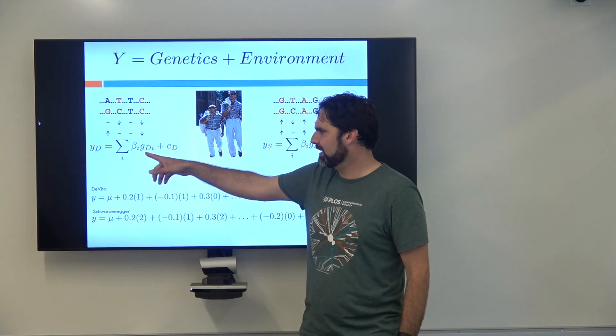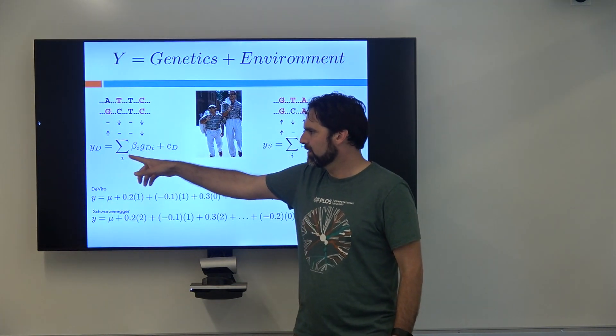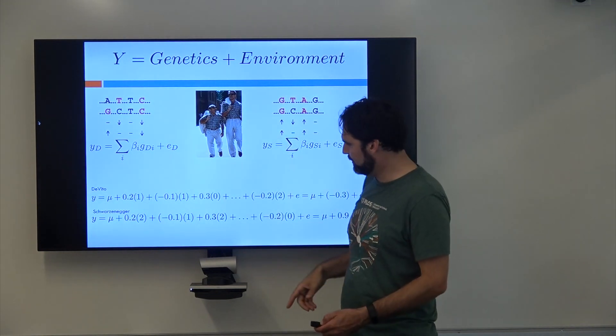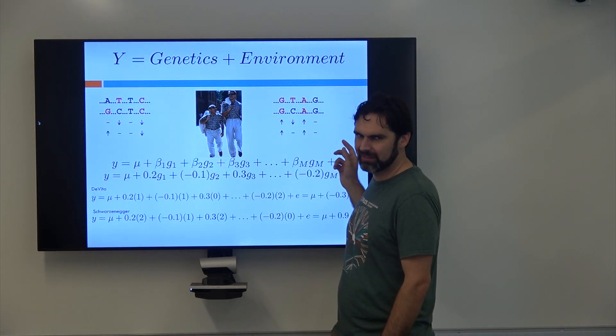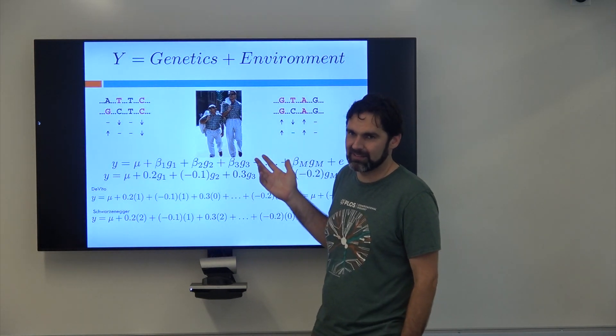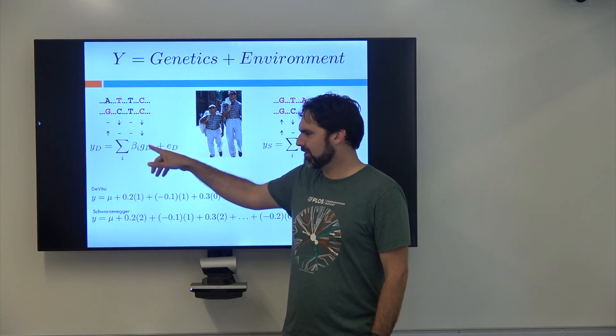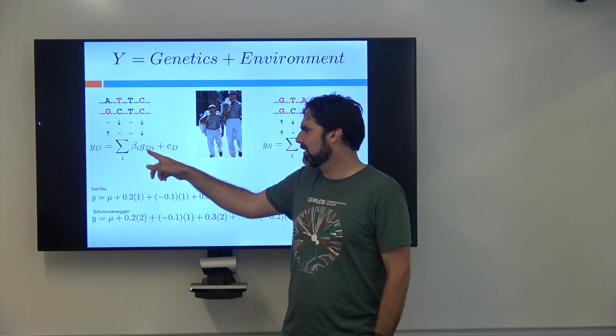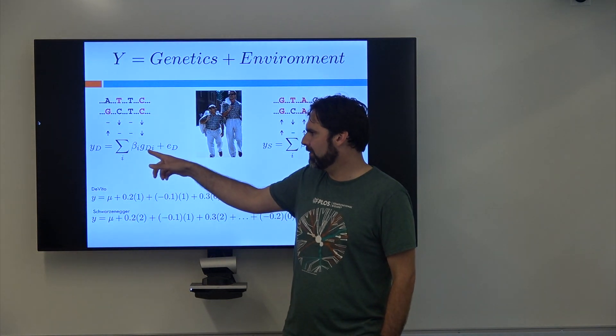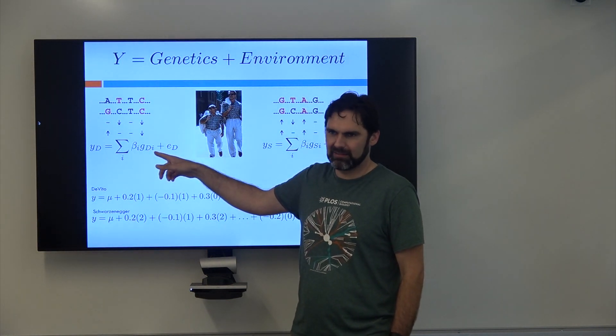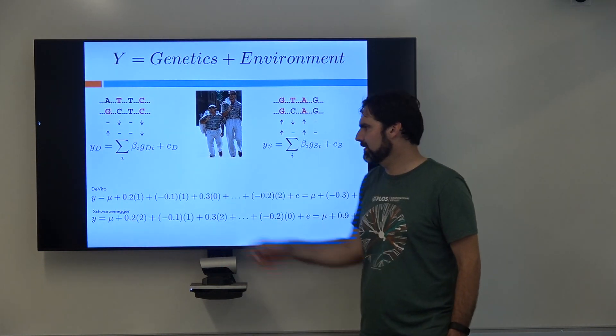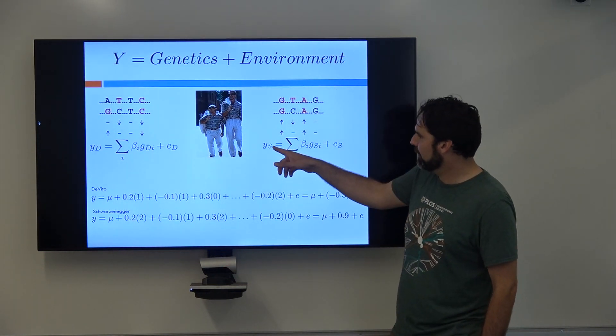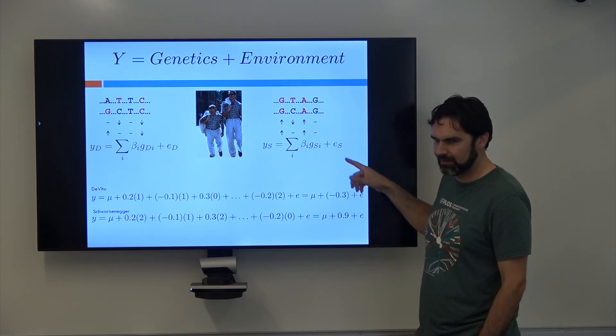And now it's not just the genetics at position i. This summation we basically took this guy and instead of writing it all out for all m SNPs, oftentimes it's like 500,000 or a million SNPs, we just write it as this summation. We say okay, the genetics of Danny DeVito at the ith SNP that we're looking at, we sum over that, and then this is his environmental component. And of course Schwarzenegger is an S, so you can see up there.